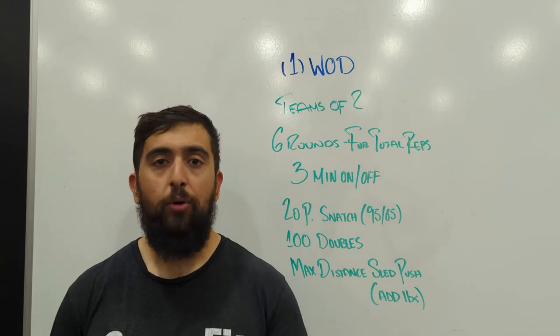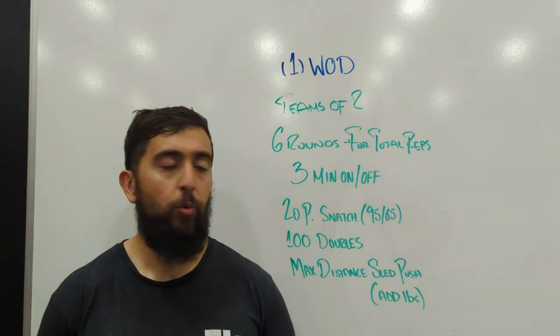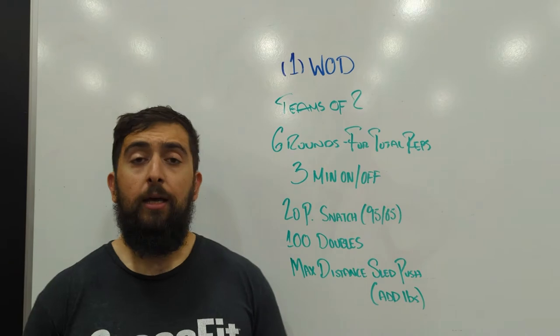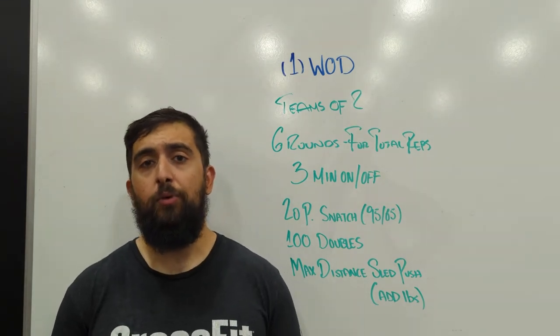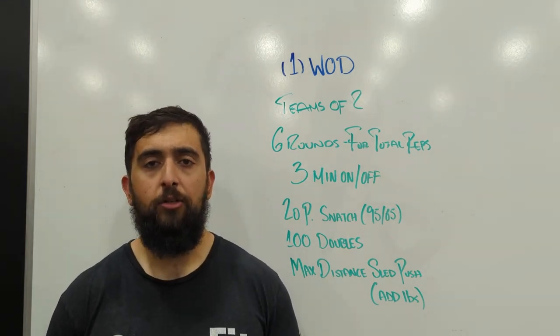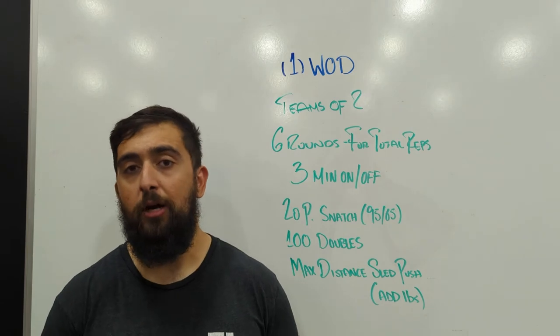Then 100 double unders, same thing, break it up as long as one partner is working at a time. You can do sets of 20. If you don't have double unders, let's break this up into single unders so we can triple the reps, go into 300 single skips.